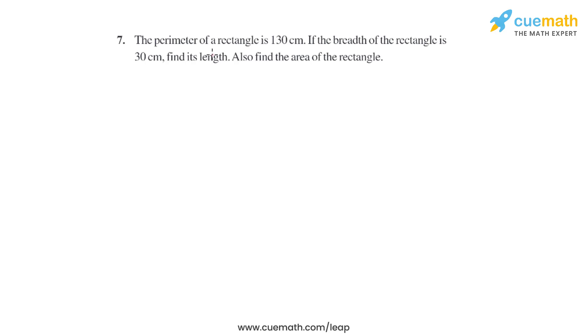Question 7 of this exercise says the perimeter of a rectangle is 130 centimeters. If the breadth of the rectangle is 30 centimeters, find its length. Also find the area of the rectangle.